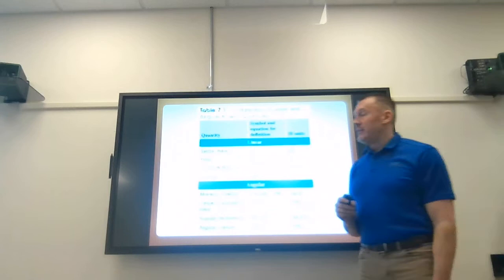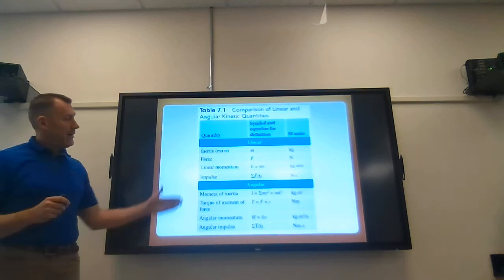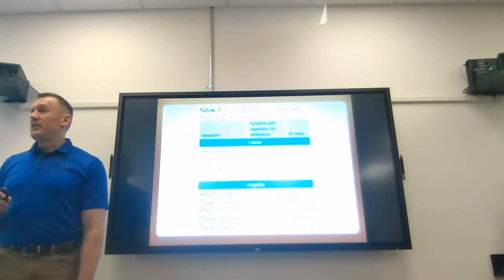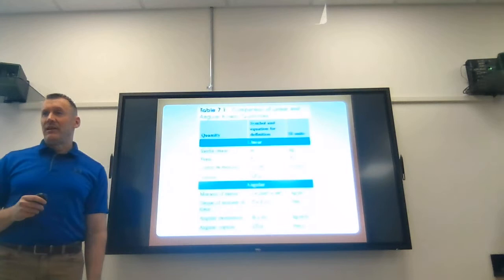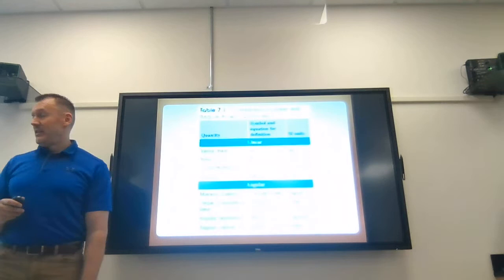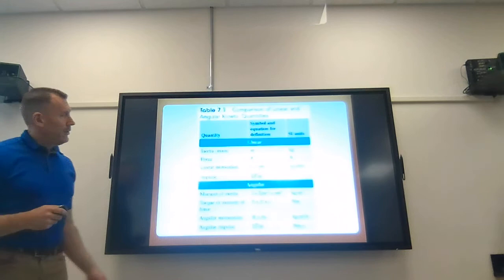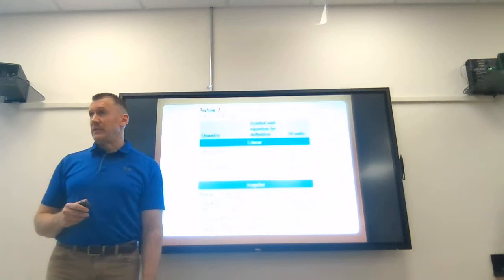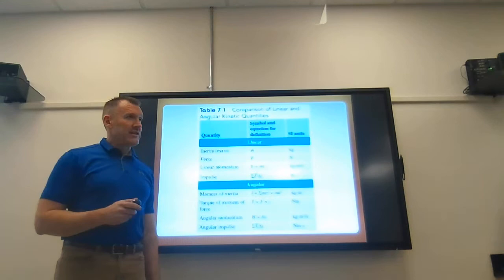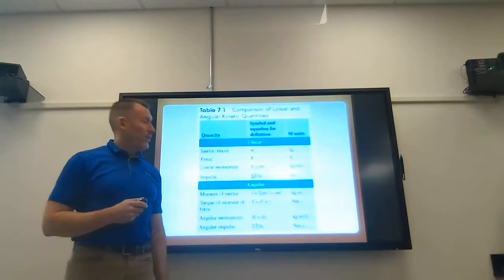As we get into this chapter and consider things from an angular standpoint, we have the same concepts but we think of it in terms of angular motion rather than linear motion. Angular motion revolves around an axis - there has to be an axis. Our joints represent the axes of our body around which the limbs rotate. Rather than inertia, we have the moment of inertia. We have to consider not only the mass but how the mass is distributed.